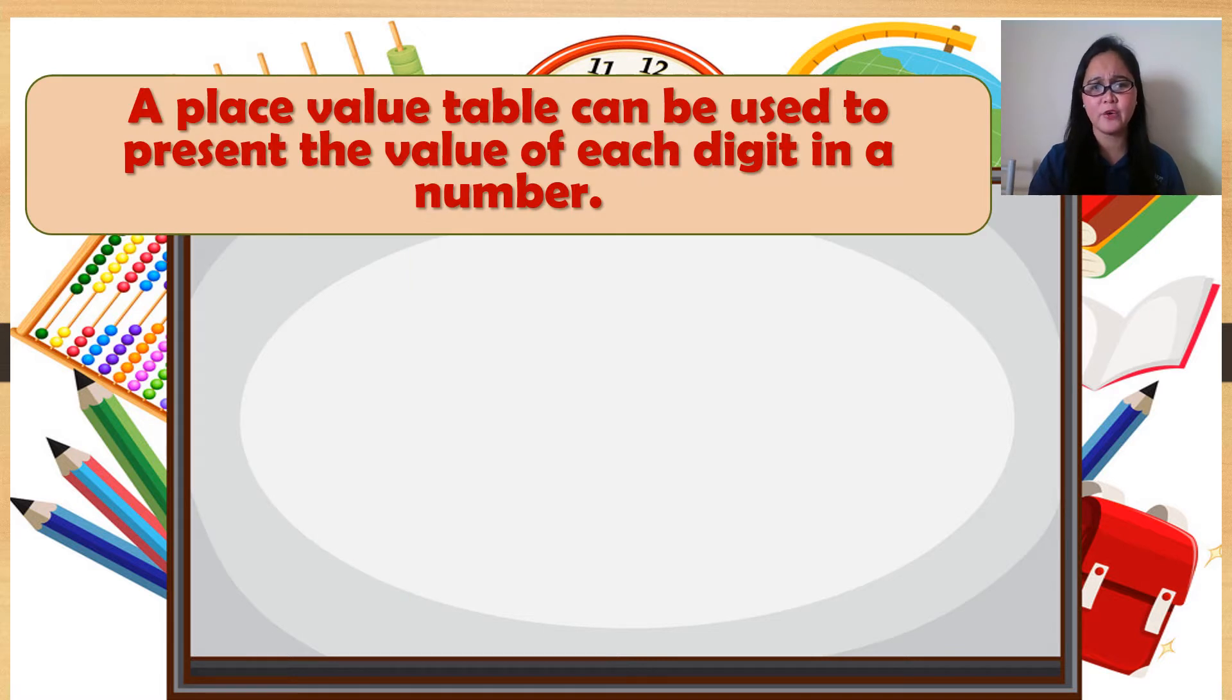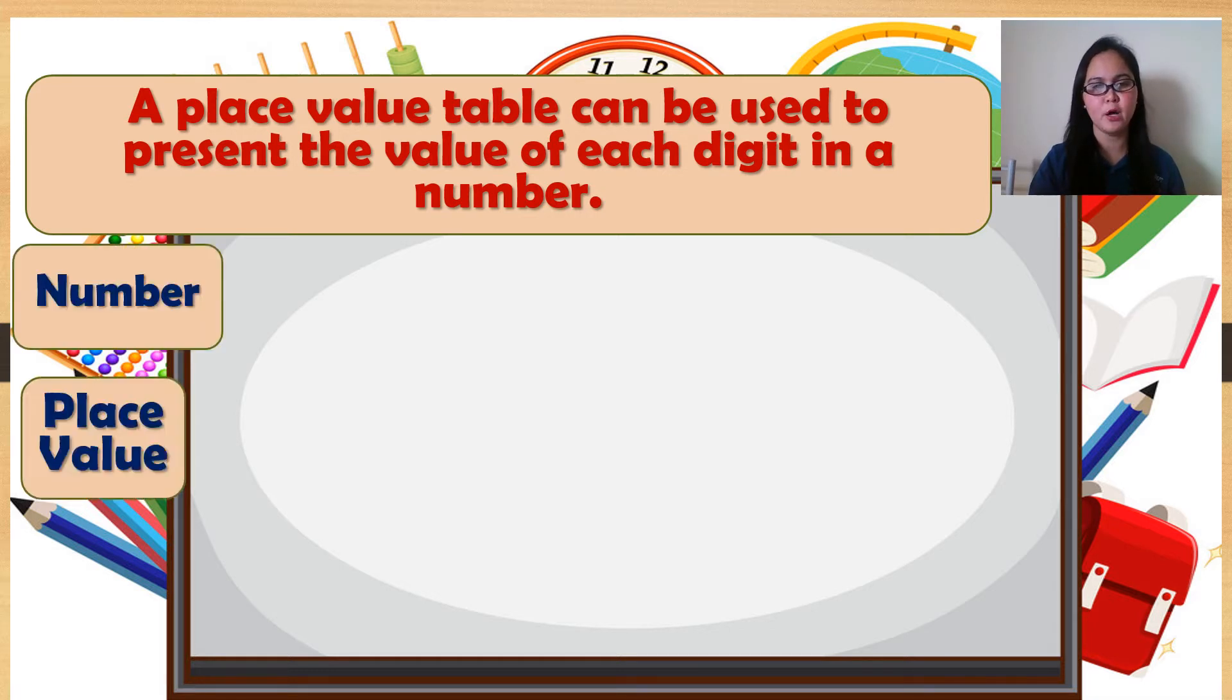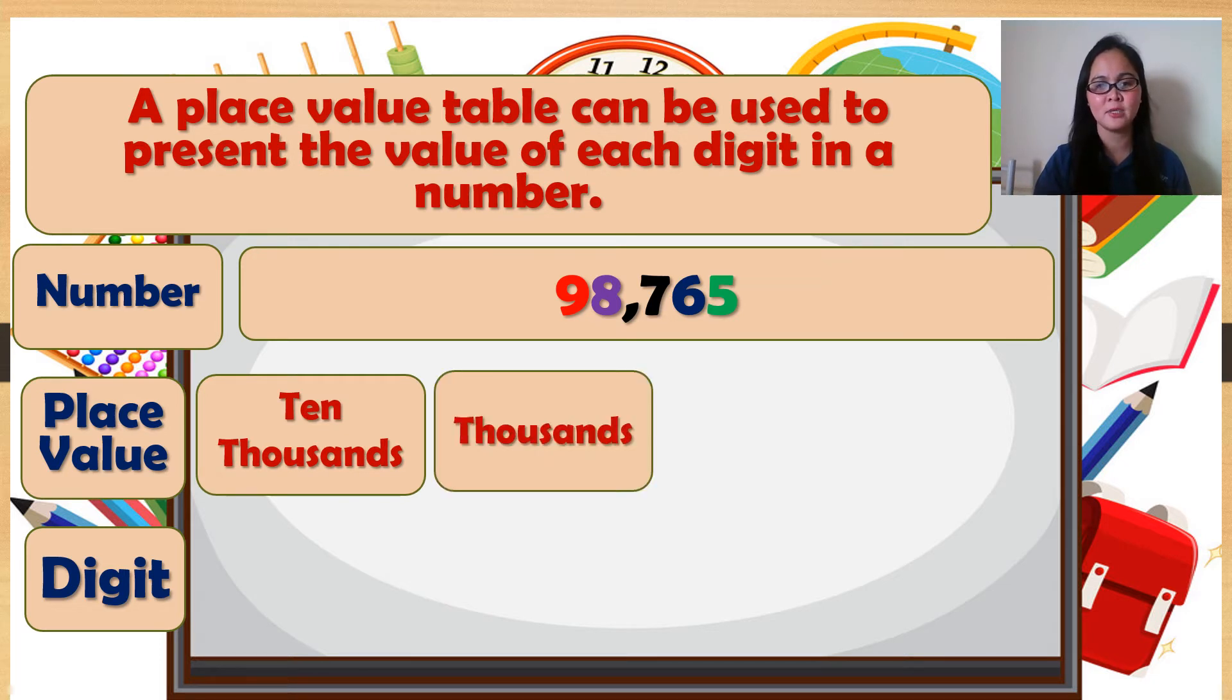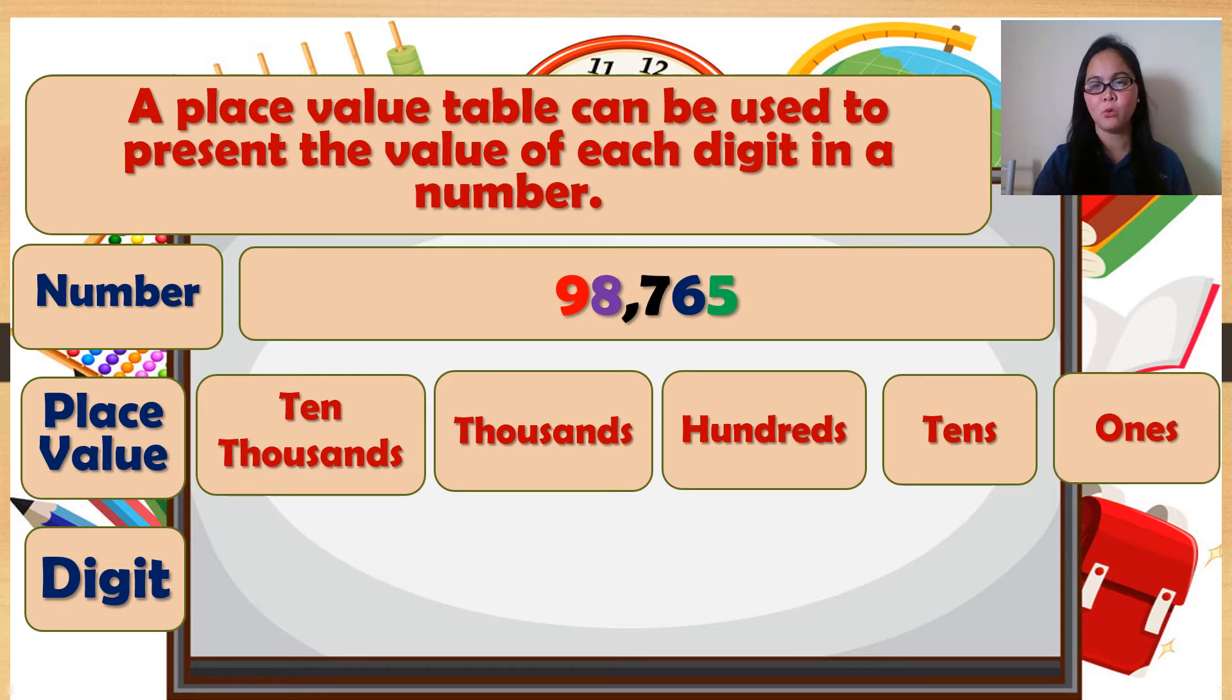A place value table can be used to present the value of each digit in a number. We have number, place value, digit. For example, the number is 98,765. Place value: we have ten thousands, thousands, hundreds, tens, ones.